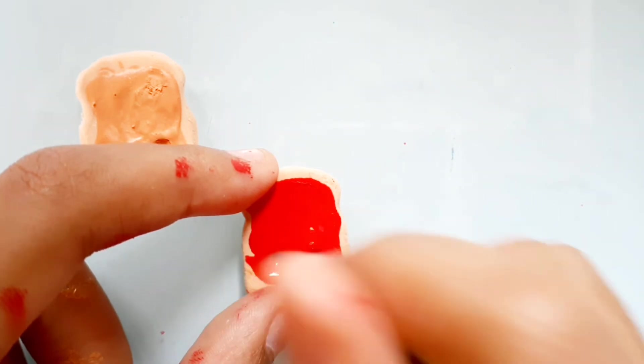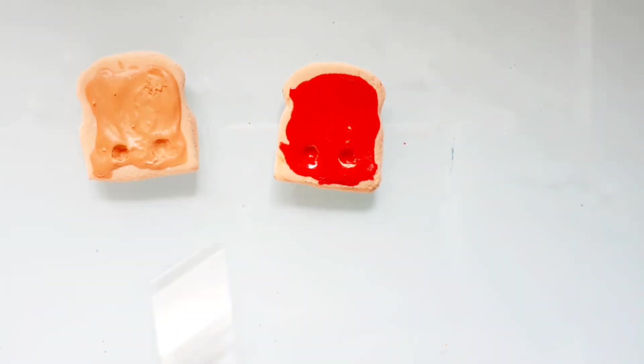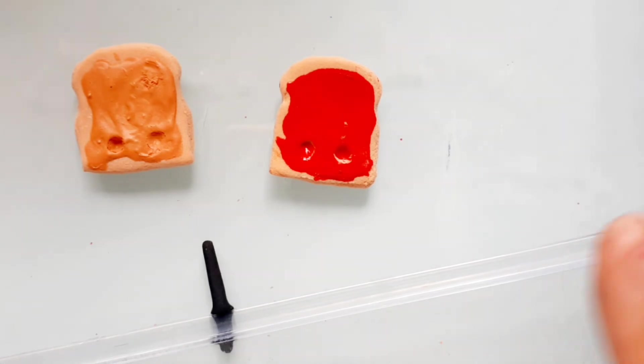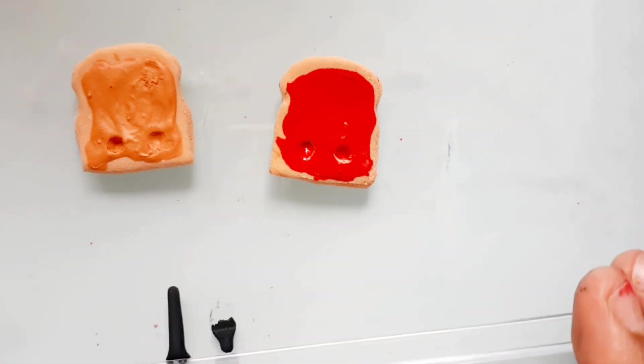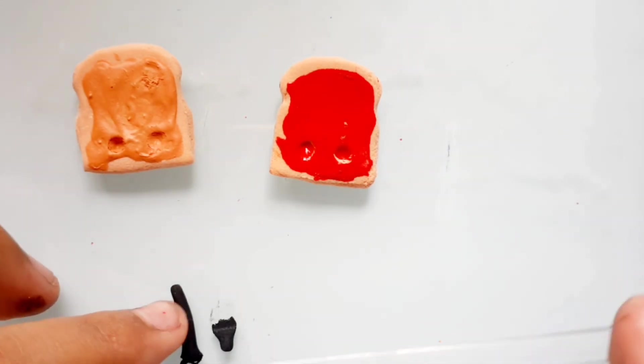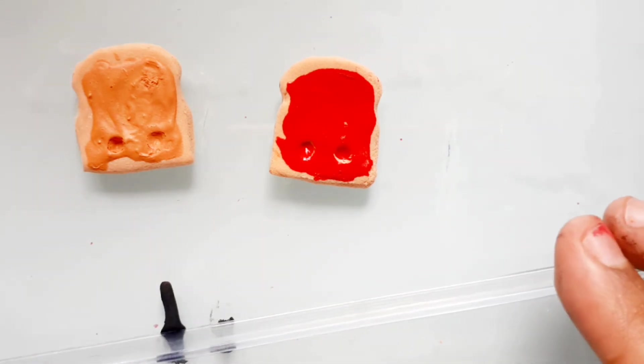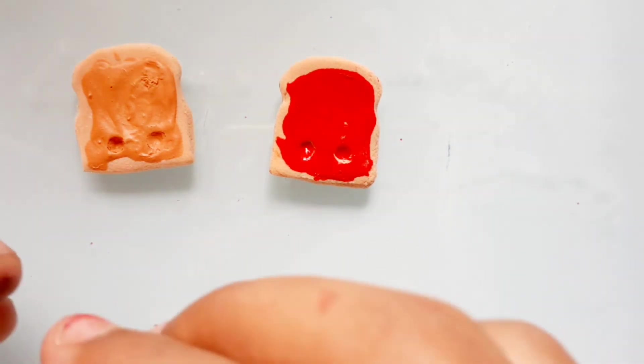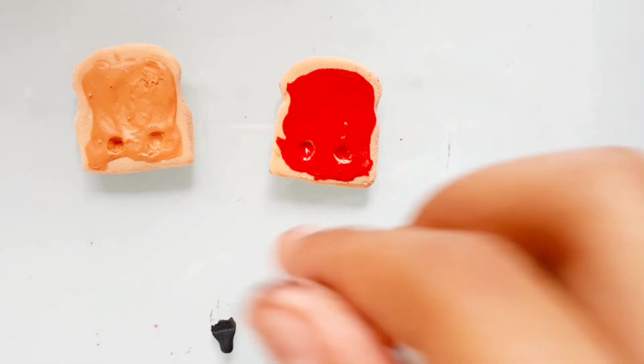You can skip this step if you can't make it. Now take some black color clay for the eyes and roll them into a ball and put it on the indents.